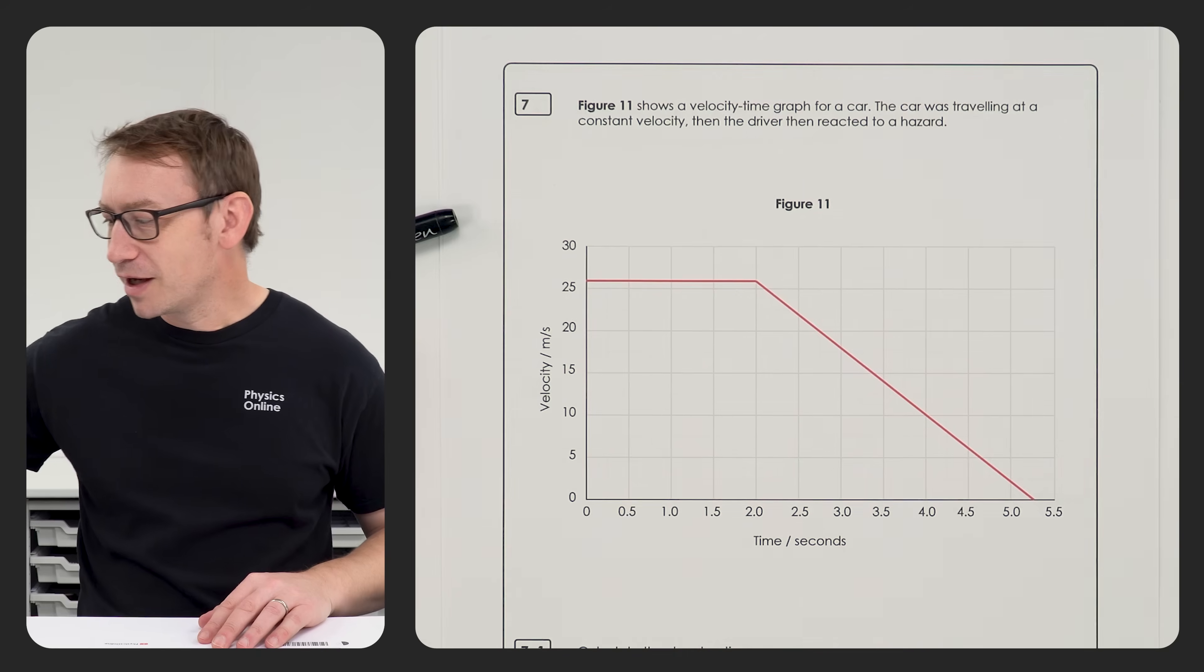Now for the first part I've actually got what it said in the examiner's report, so this is written by the people who mark the exams, and basically only 25 percent got three marks here. They need to calculate the deceleration.